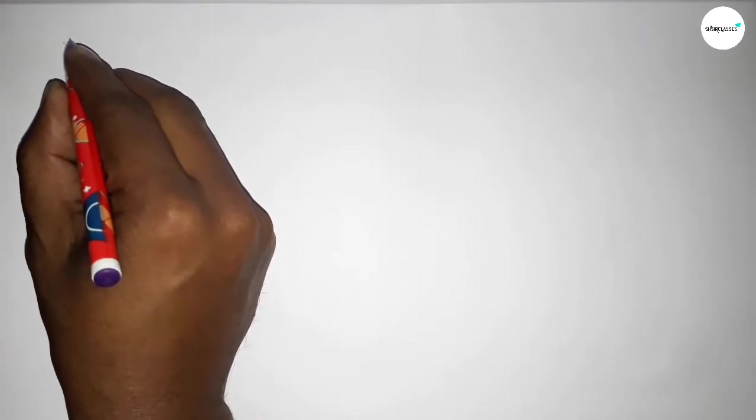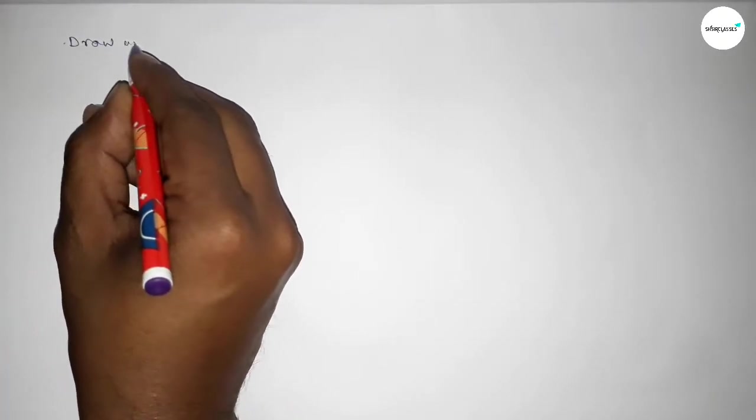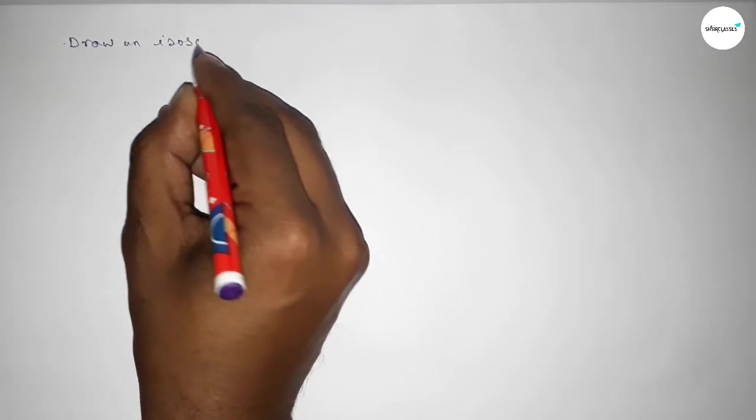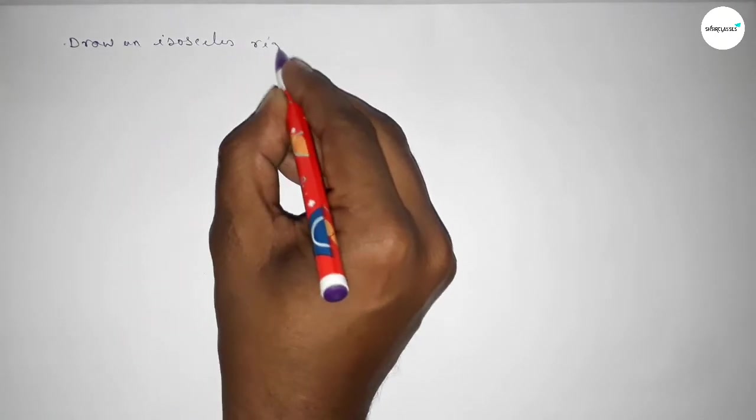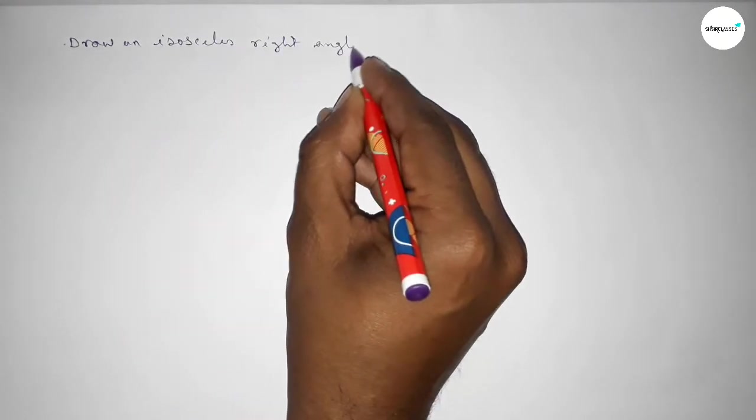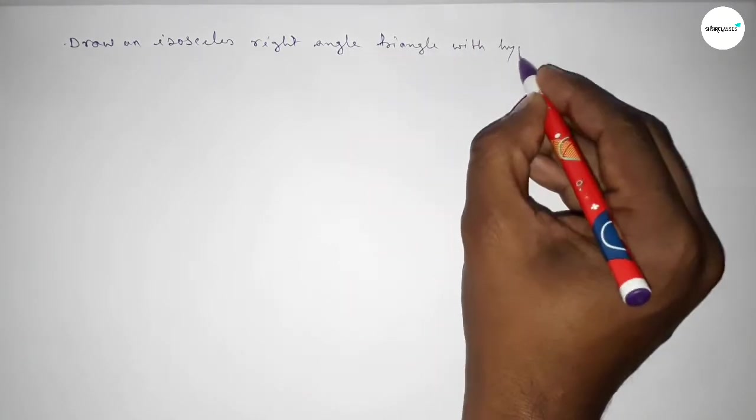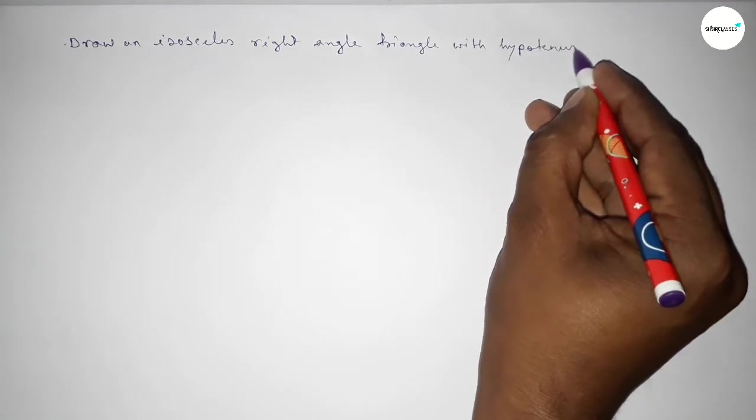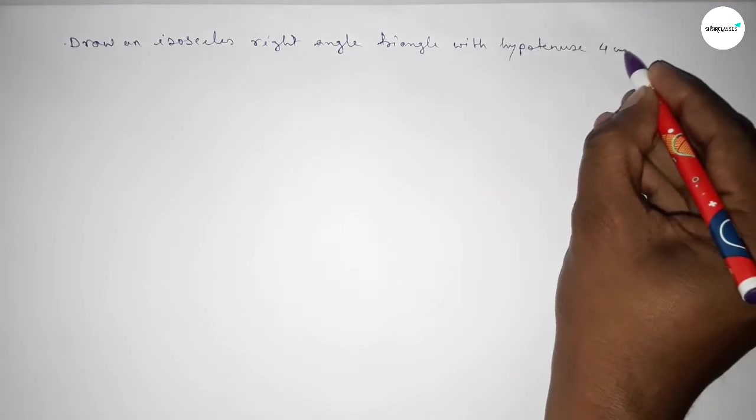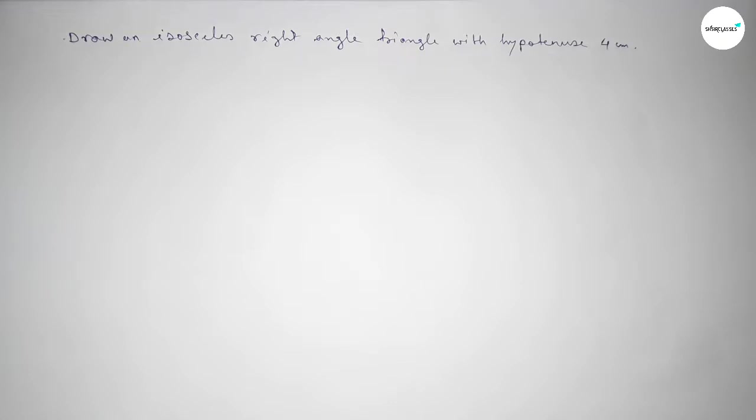Hi everyone, welcome to essay share classes. Today in this video we have to draw an isosceles right angle triangle with given only hypotenuse 4 centimeter. So constructing an isosceles right angle triangle, let's start the video.